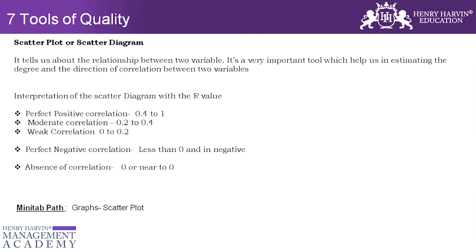When we prepare a scatter plot for productivity versus quality, we can establish what sort of correlation exists — perfect positive, negative, moderate, or weak correlation. The positive correlations have R values ranging from 0 to 1. Negative correlation is R less than zero, going toward minus 1. If it is exactly zero or very near to zero, it is called no correlation.